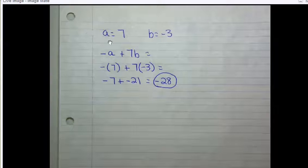Here are my notes. When a equals 7 and b equals negative 3, for the expression the opposite of a plus 7 times b. And so the opposite of 7 plus 7 times negative 3.